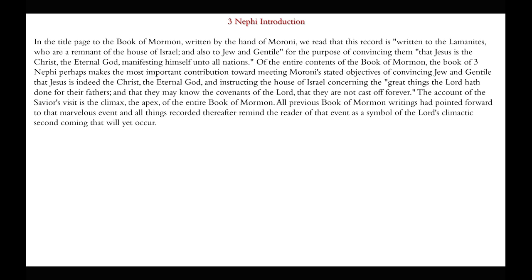In the title page to the Book of Mormon by the hand of Moroni, we read that this record is written to the Lamanites, who are remnant of the house of Israel, and also to Jew and Gentile, for the purpose of convincing them that Jesus is the Christ, the eternal God, manifesting himself unto all nations. The book of 3rd Nephi perhaps makes the most important contribution toward meeting Moroni's stated objectives of convincing Jew and Gentile that Jesus is indeed the Christ, the eternal God, and instructing the house of Israel concerning the great things the Lord hath done for their fathers, and that they may know the covenants of the Lord that are not cast off forever. The account of the Savior's visit is the climax, the apex of the entire Book of Mormon. All previous Book of Mormon writings had pointed forward to that marvelous event, and all things recorded thereafter remind the reader of that event as a symbol of the Lord's climactic second coming that will yet occur.